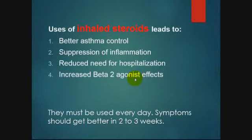Beta-agonists are divided into short-acting and long-acting types. Short-acting beta-agonists are mostly used during acute attacks — for example, salbutamol.